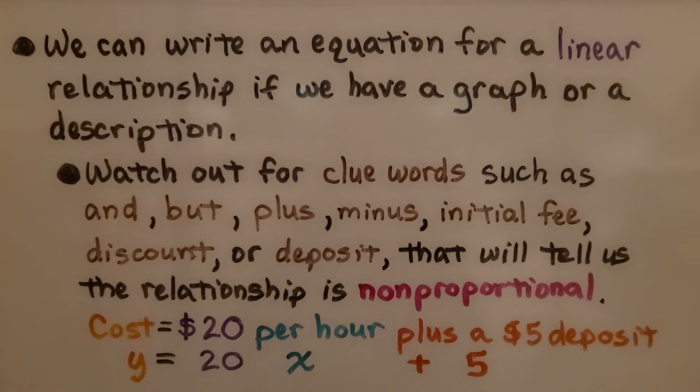We can write an equation for a linear relationship if we have a graph or a description. Watch out for clue words such as and, but, plus, minus, initial fee, discount, or deposit that will tell us the relationship is non-proportional because these are added conditions. If there's an initial fee or a discount or a deposit, if we have a cost and it's equal to $20 per hour plus a $5 deposit, that's an additional condition. That's our y-intercept b.